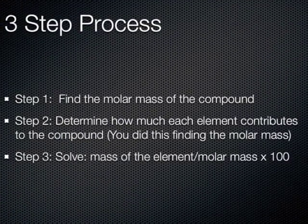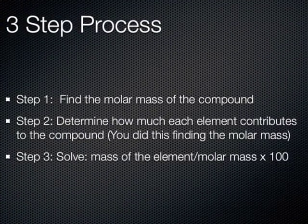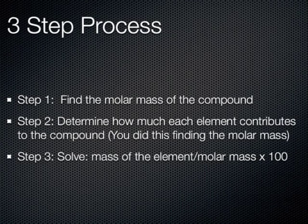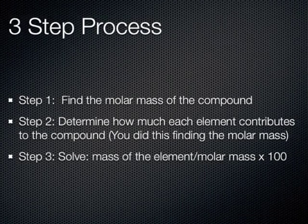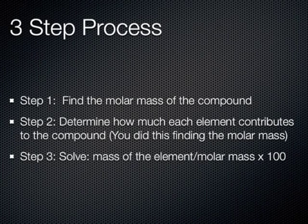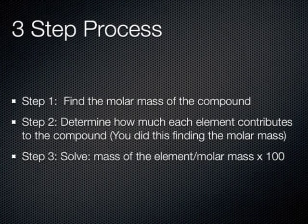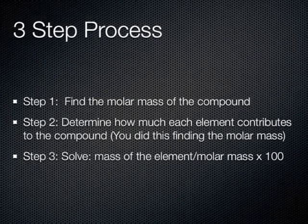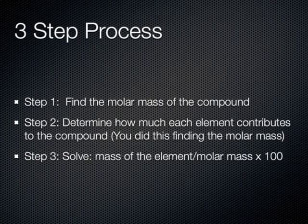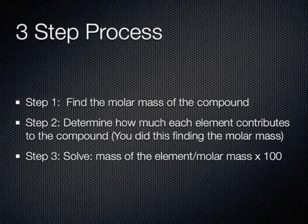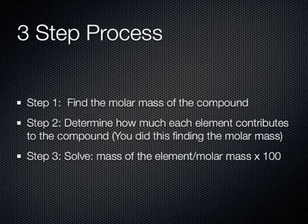It involves a three-step process. First, we have to begin by finding the molar mass of the compound. Secondly, we determine how much of each element contributes to the compound. You've already done this by finding the molar mass. And then finally, we just solve for the percent composition. It's the mass of the element divided by the molar mass times 100.